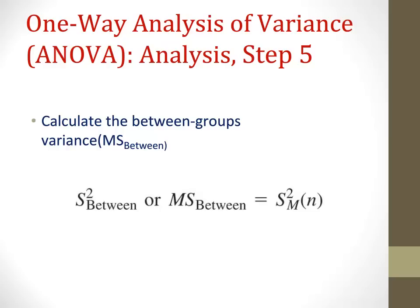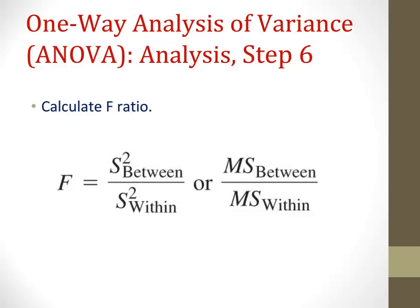This method only works if the samples are the same size. The between-groups variance tells us about the amount of variation due to the effect of different treatments, which is what we're primarily interested in with a one-way ANOVA. We now have the second value needed to compute the F-ratio. F equals the between-groups variance divided by the within-groups variance — dividing the value from Step 5 by the value from Step 2.